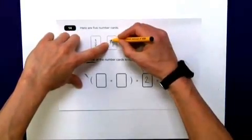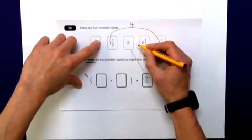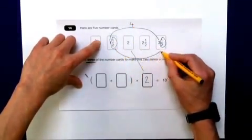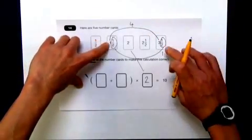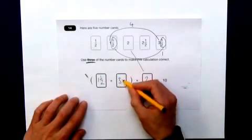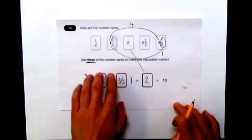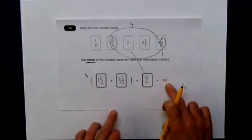What about if I take the one and a half and the three and a half, what would that give me? Well, the one added to the three would give me four, and the half here and the half here added together would give me another one. So that would give me my four and my one. So indeed, those two cards in there, 1 1/2 and 3 1/2, would make this calculation correct. This bit equals 5 multiplied by 2 equals 10.